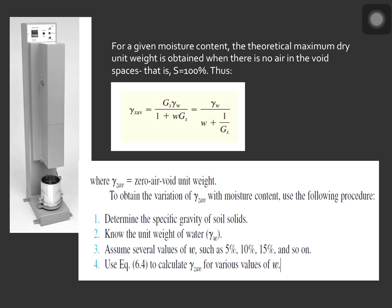For a given moisture content, the theoretical dry unit weight is obtained when there is no air in the void spaces, that is when the degree of saturation is equal to 100%. Thus, the maximum dry unit weight at a given moisture content with zero air voids can be given as zero air void unit weight equal to Gs times gamma_w all over 1 plus the void ratio e.